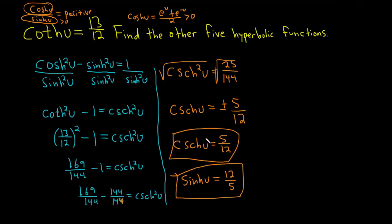All right. What else do we need? Well, we can find hyperbolic tangent. Let's do that. Hyperbolic tangent is the reciprocal of hyperbolic cotangent. So that'll just be 12 over 13 because you just flip it.